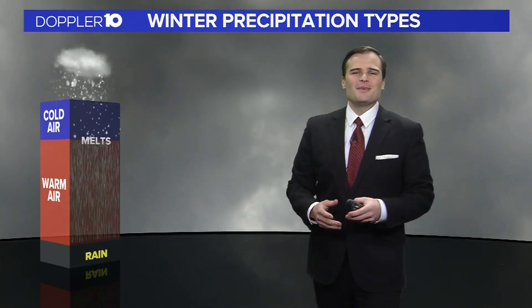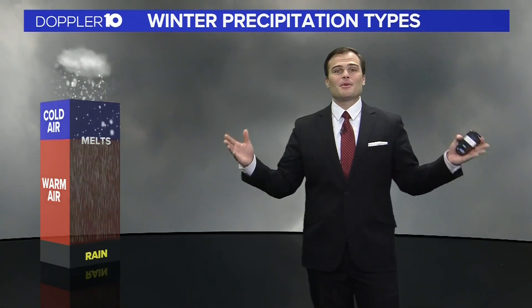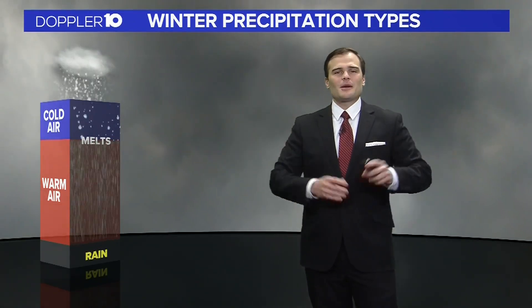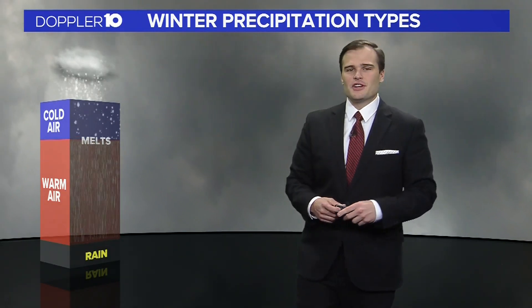Hey future casters, I'm Doppler 10 meteorologist Ross Caruso. It's December, so let's talk about the different types of winter precipitation.